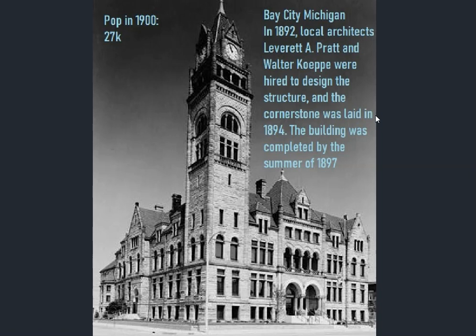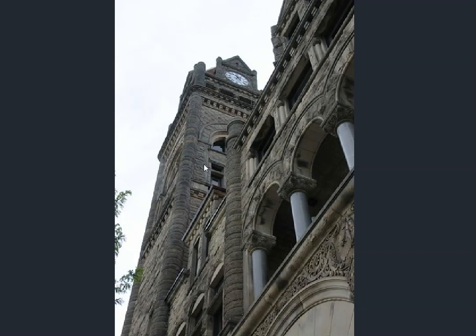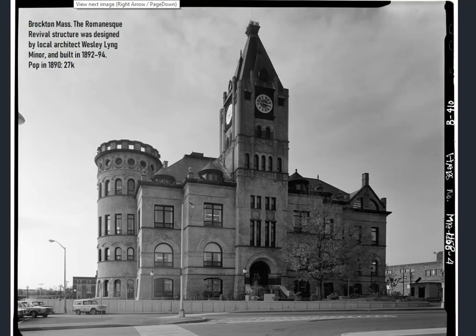Next we go to Bay City, Michigan, 1892. Local architects Pratt and Kent Cope were hired to design the structure, looking almost identical to the previous one. Cornerstone laid 1894, completed summer 1897. Small town at the time — 27,000 people. It still stands, still looking quite permanent and strong. Windows going right down to ground level with access into lower areas. Looking old, charred, possibly much older than a hundred-plus years, reminding me of structures in Europe attributed with a longer shelf life.